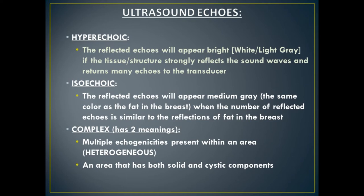Fat on a breast ultrasound is a medium gray color, and all the colors we look at are compared to that medium gray. Isoechoic means that the structure reflects the same amount as that medium gray fat, returning medium gray echoes back to the transducer. Isoechoic masses are often the hardest to find on ultrasound because they really blend in with the breast tissue.